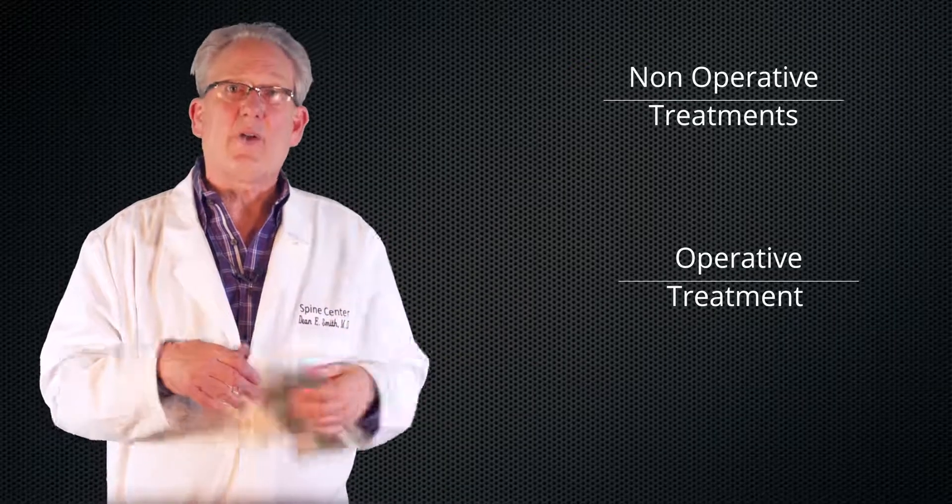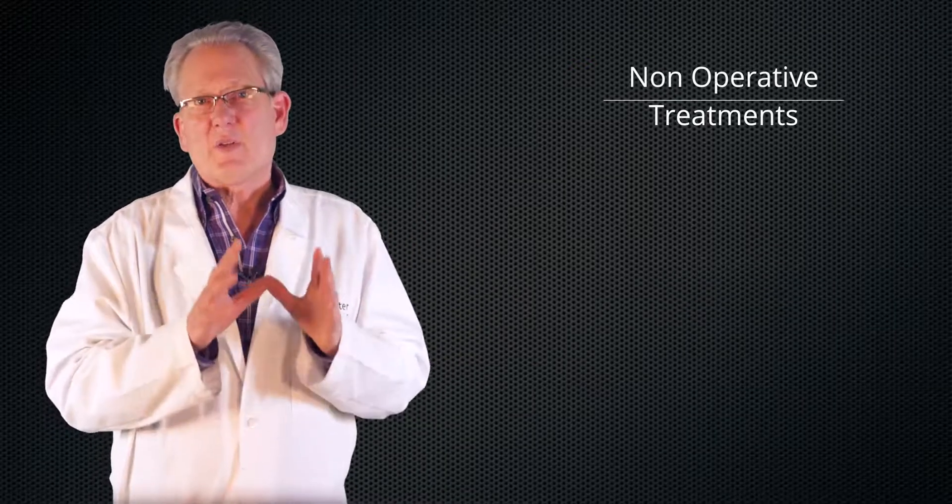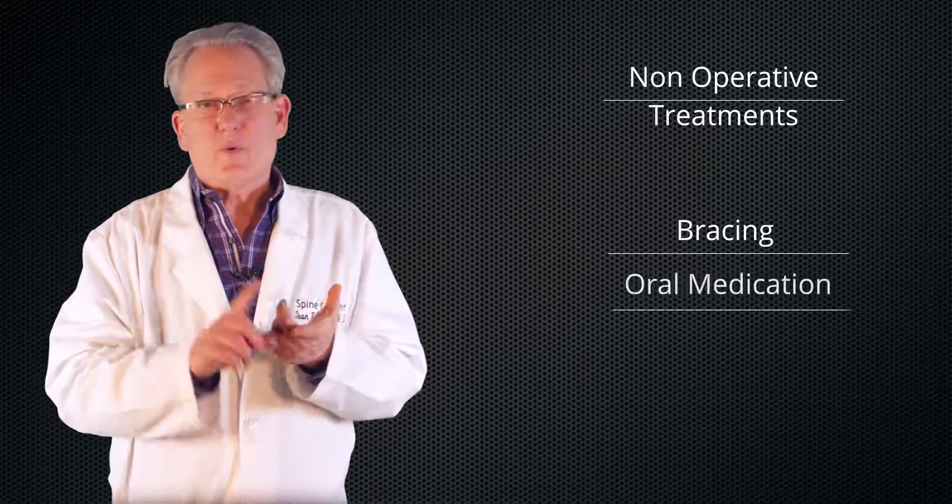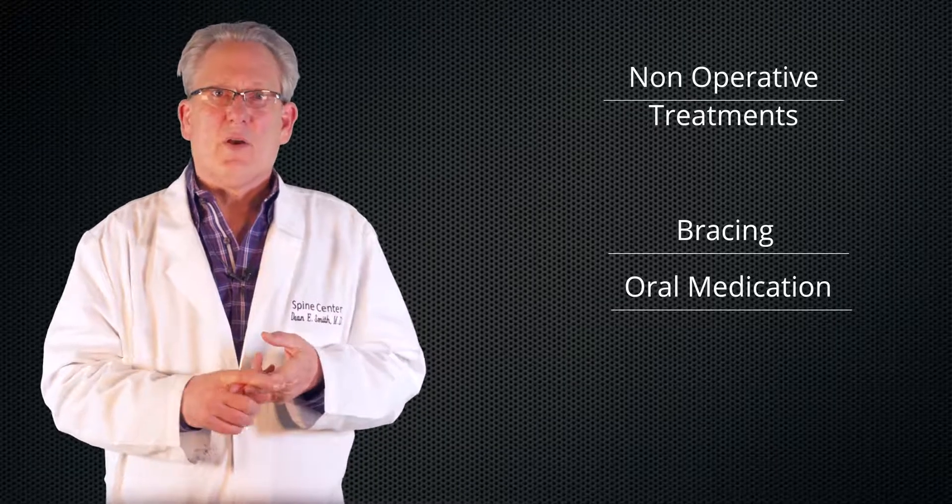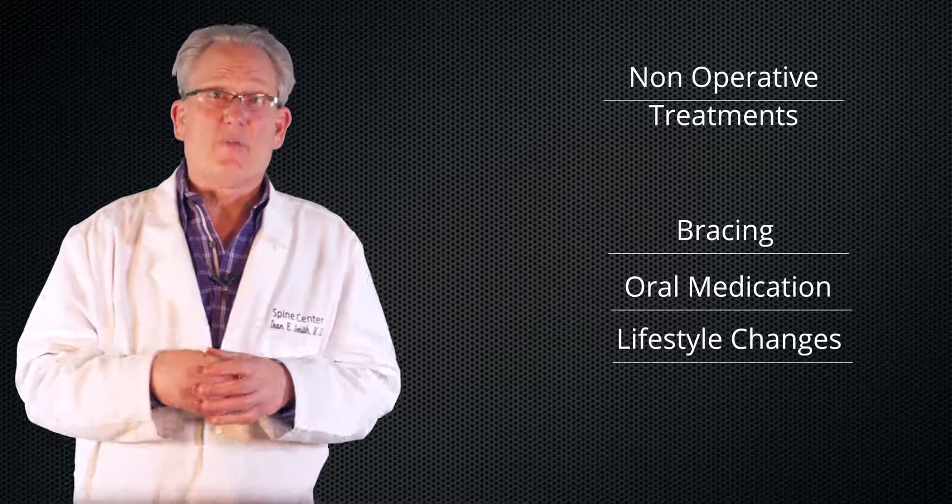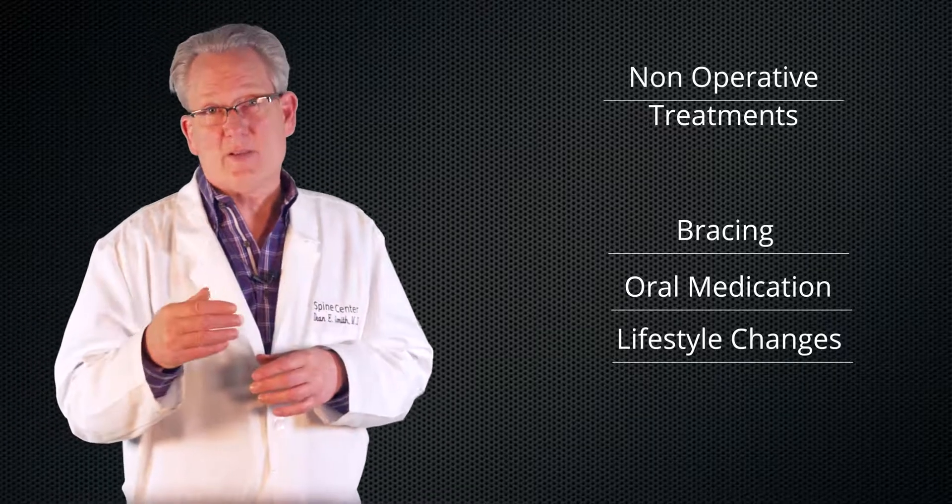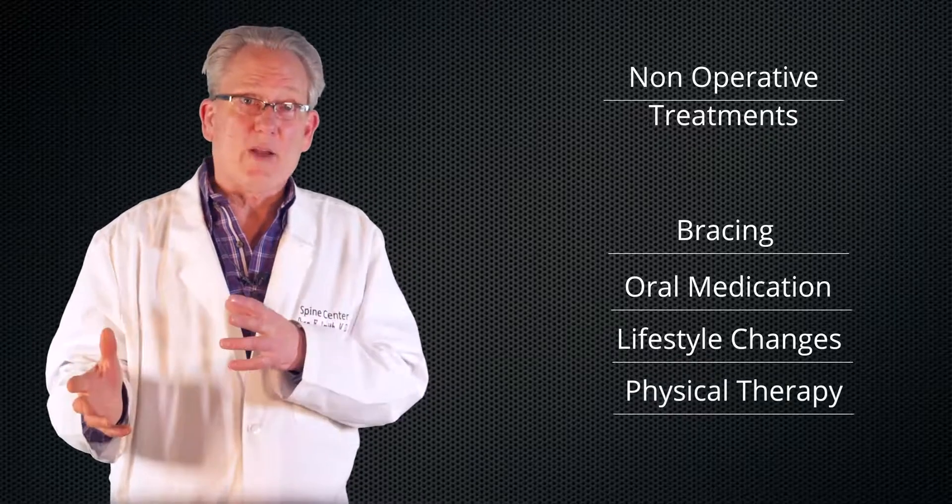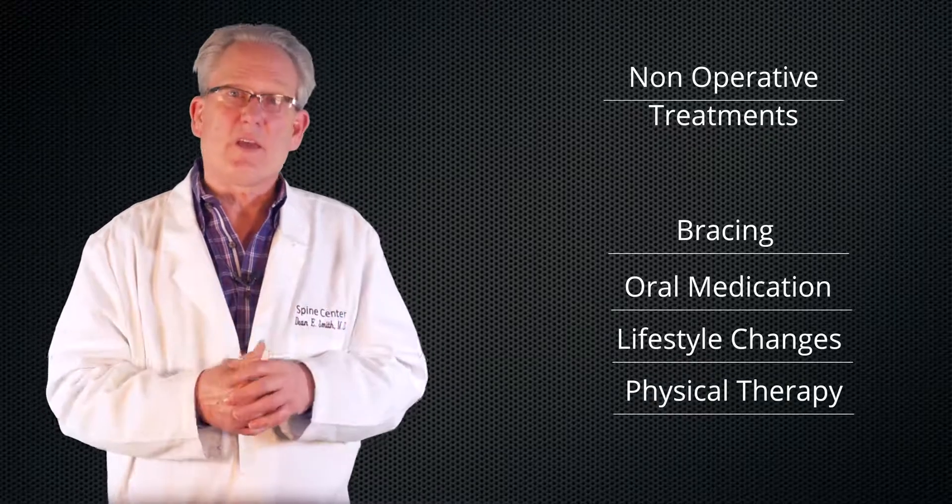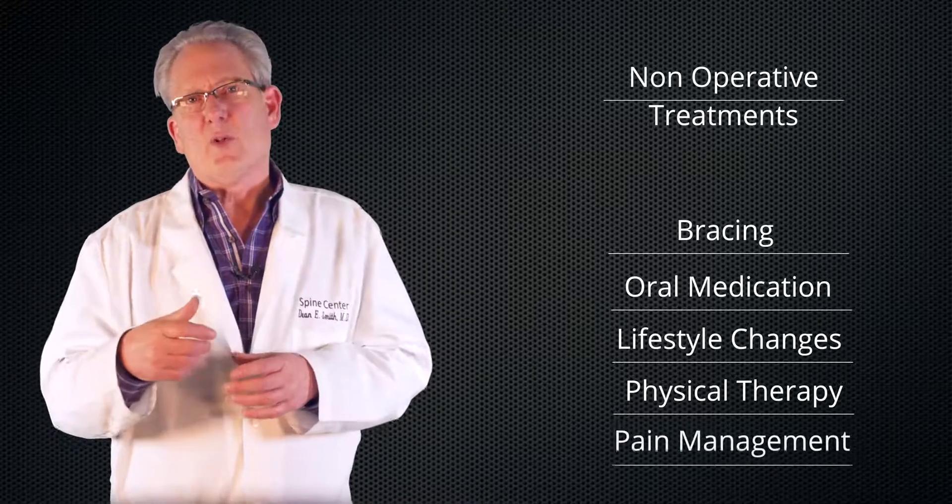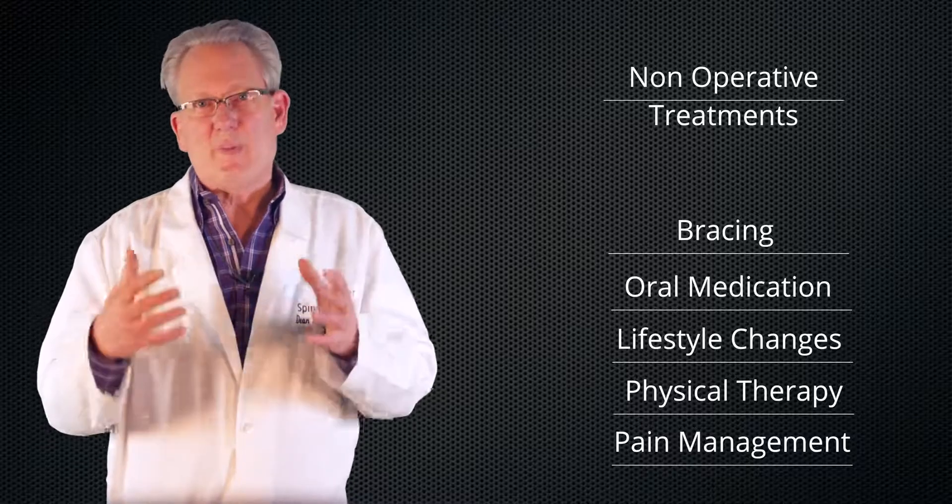The treatment is divided into two different types - you have non-operative and operative. Many times non-operative begins with bracing if it's a fracture. We will use oral medications. Sometimes we'll suggest lifestyle changes. If you are, for example, a football lineman, we may decide that that's not the best lifestyle for you. We use physical therapy for spinal stabilization, strengthening exercises. And if somebody has enough pain, we will use pain management and epidural injections.